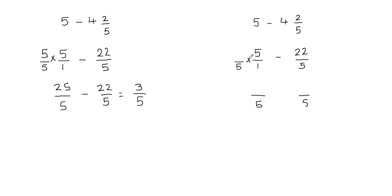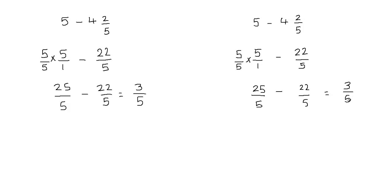I can multiply by 5 because 5 times 1 gives me 5. If I multiply the denominator by 5, I have to be fair and multiply the numerator also by 5 to balance the fraction — that's how I get 5 over 5 here. So 5 times 5 is 25, giving me 25 over 5. The second fraction already has denominator 5, so I leave it as is and subtract: 25 minus 22 gives me 3, so the answer is 3 fifths.